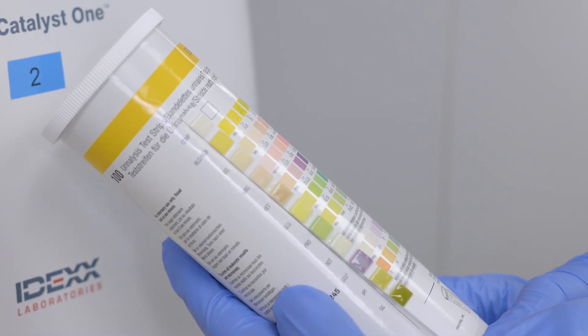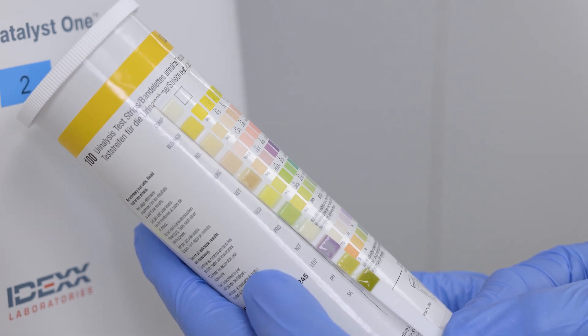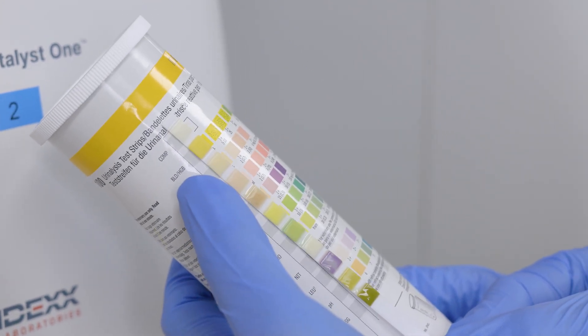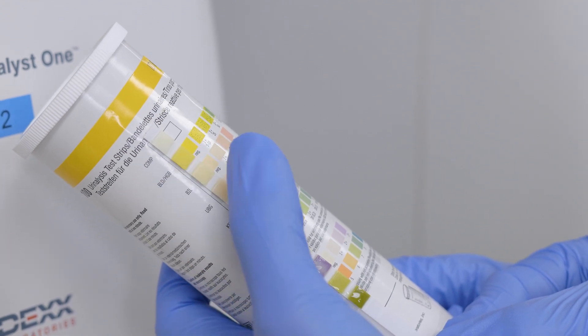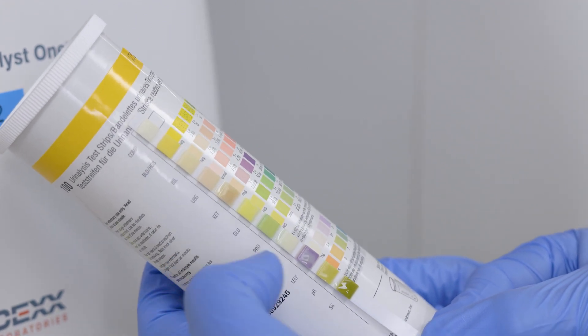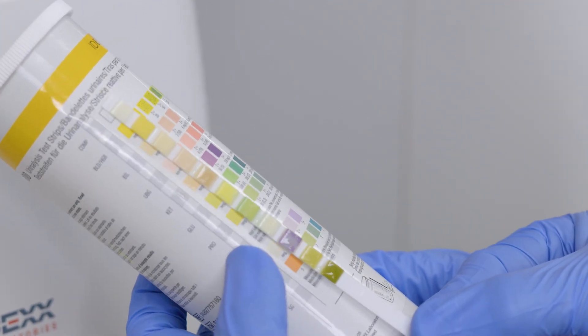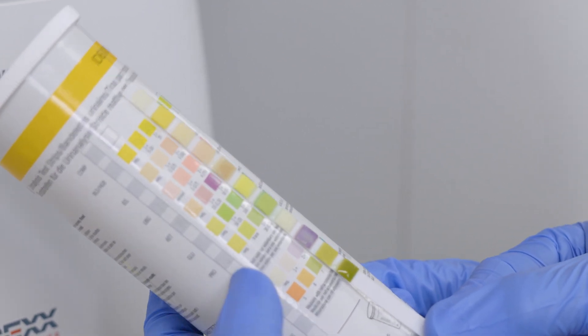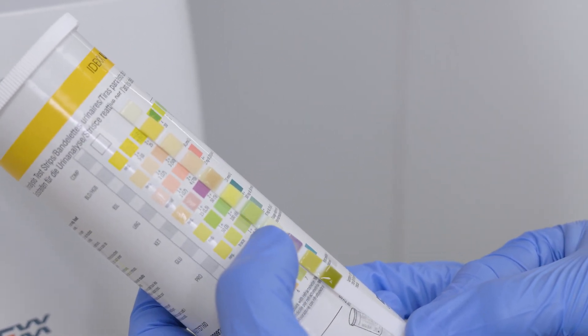If we were to run this manually again we would read the results at one minute and you want to look at each individual one. When we're looking at them we want to compare the colors and that will give us our value. For example if we're looking at our protein we're going to slide over to kind of see where we're the closest of color to and it looks like we're about the one plus here.